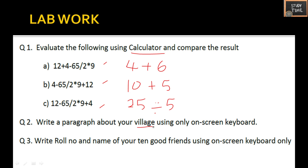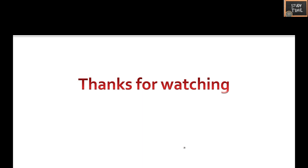Open any application like Microsoft Word or Notepad and write the roll number and name of any 10 of your friends using the on-screen keyboard. This is a simple lab work — hope you will easily do it. This chapter ends here. Hope this video is useful and understandable. Thanks for watching.